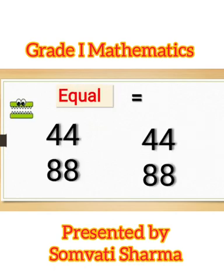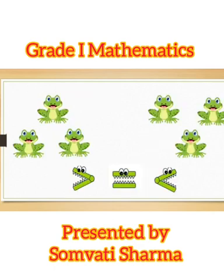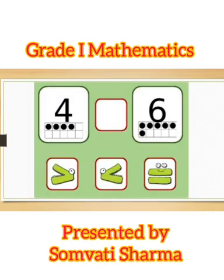Now here you can see more examples. 44, 44. Both numbers are equal. So equals to. 88 equals to 88. Here 3 folks and here 3 folks, both equal. 3 and 3, both numbers are equal. So equals to. Here you can see 4, 6. So 4 is less than 6.